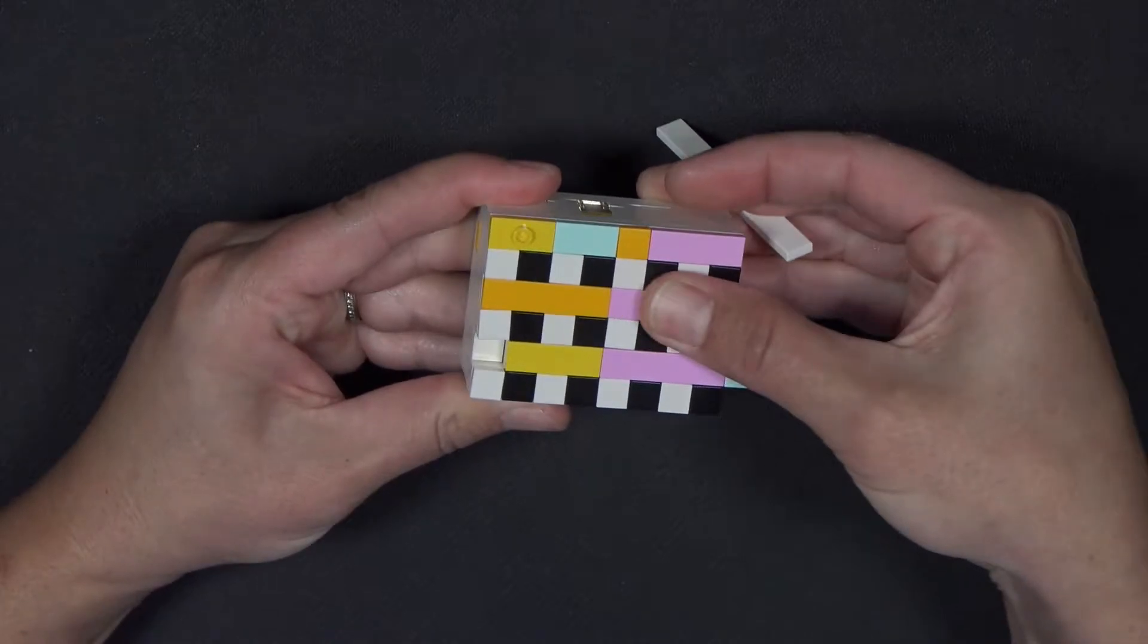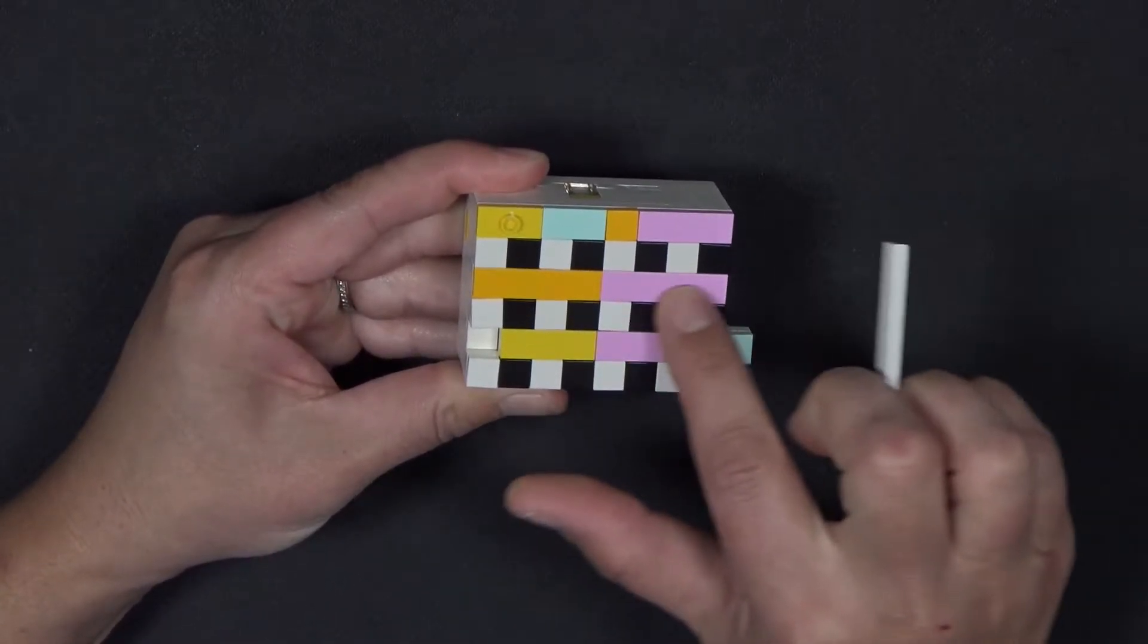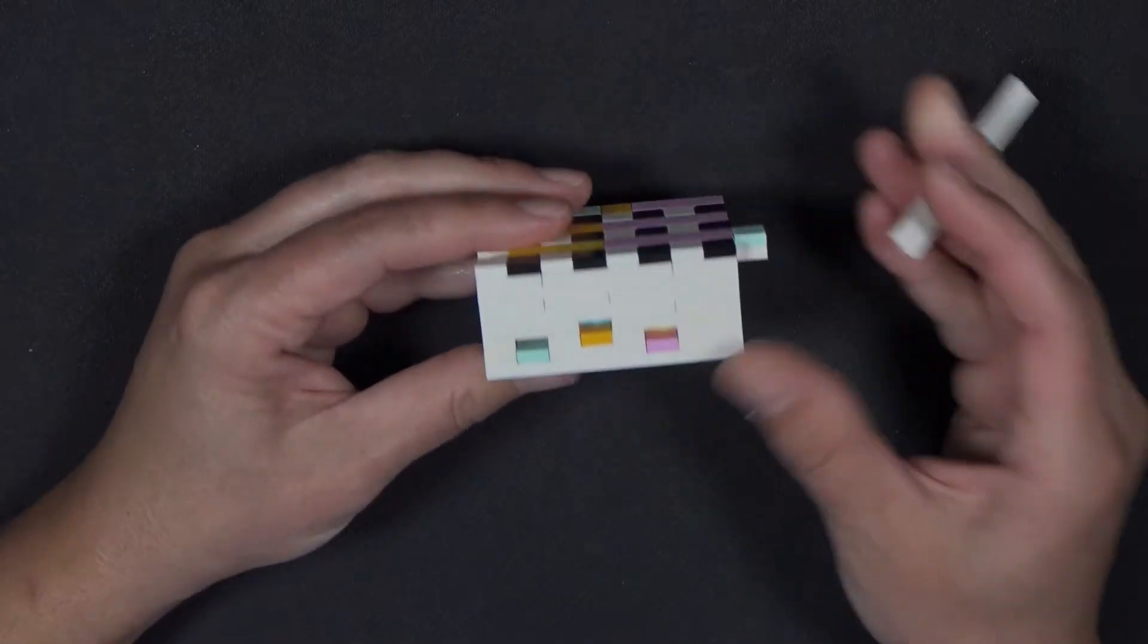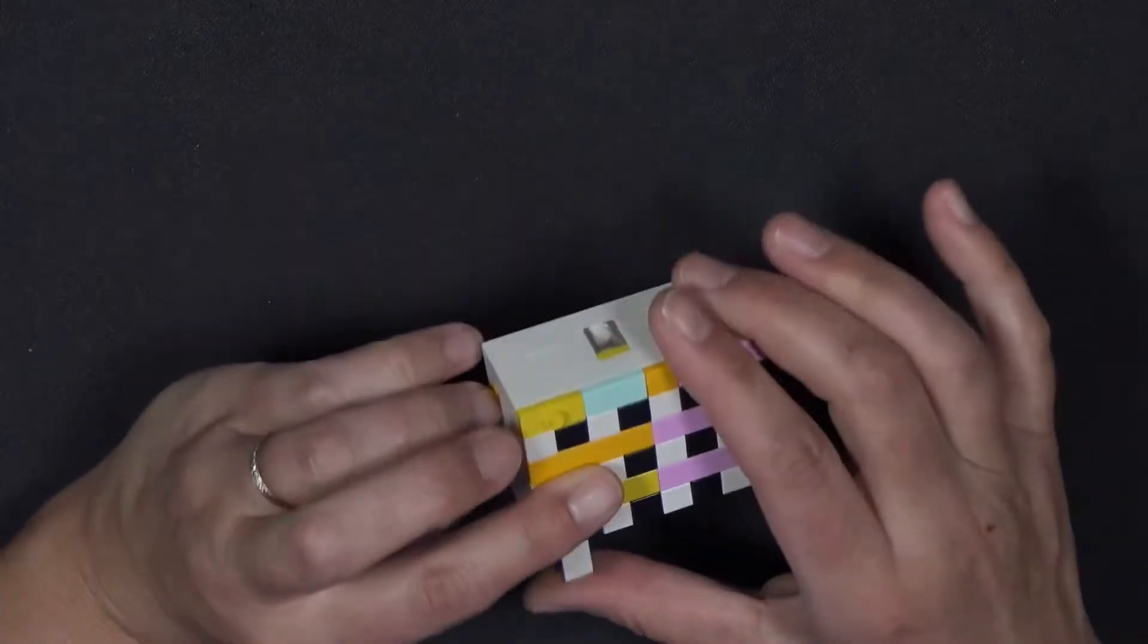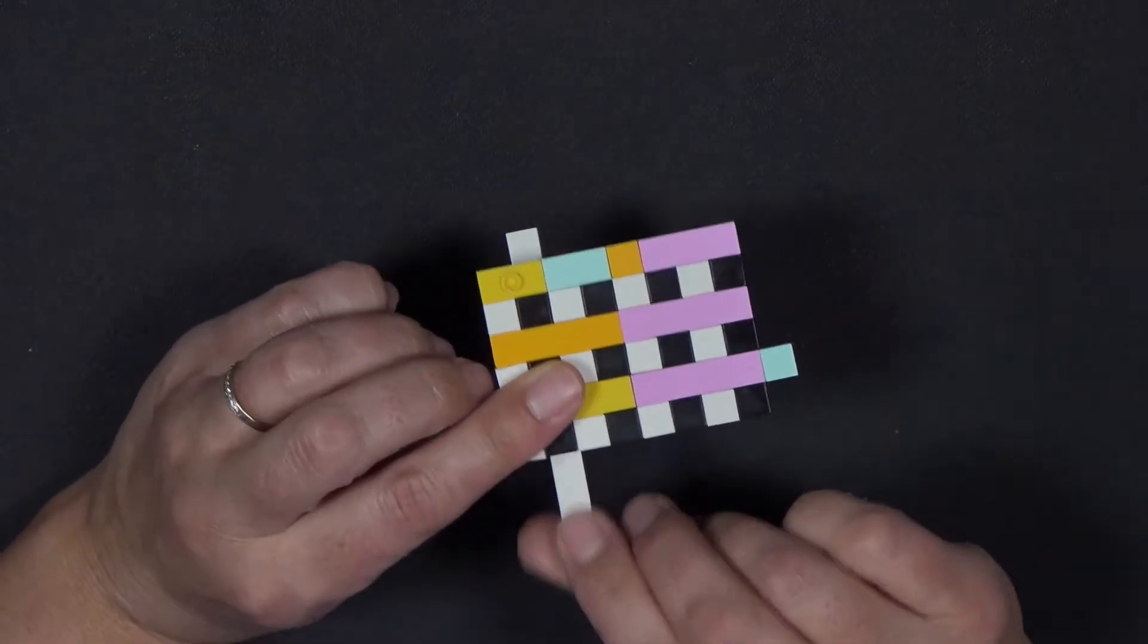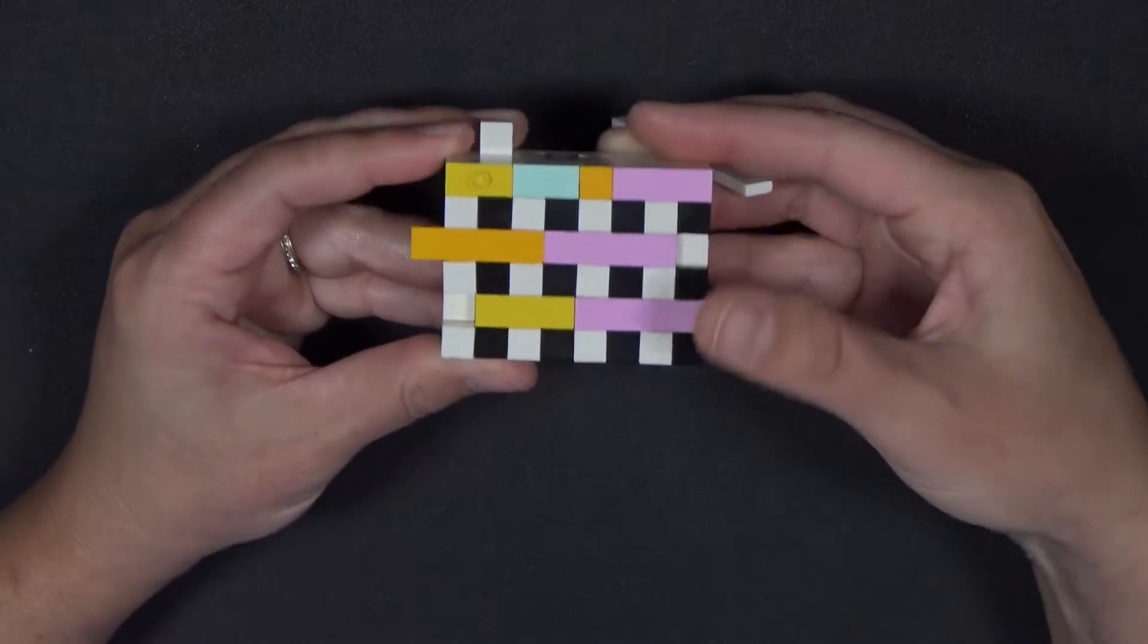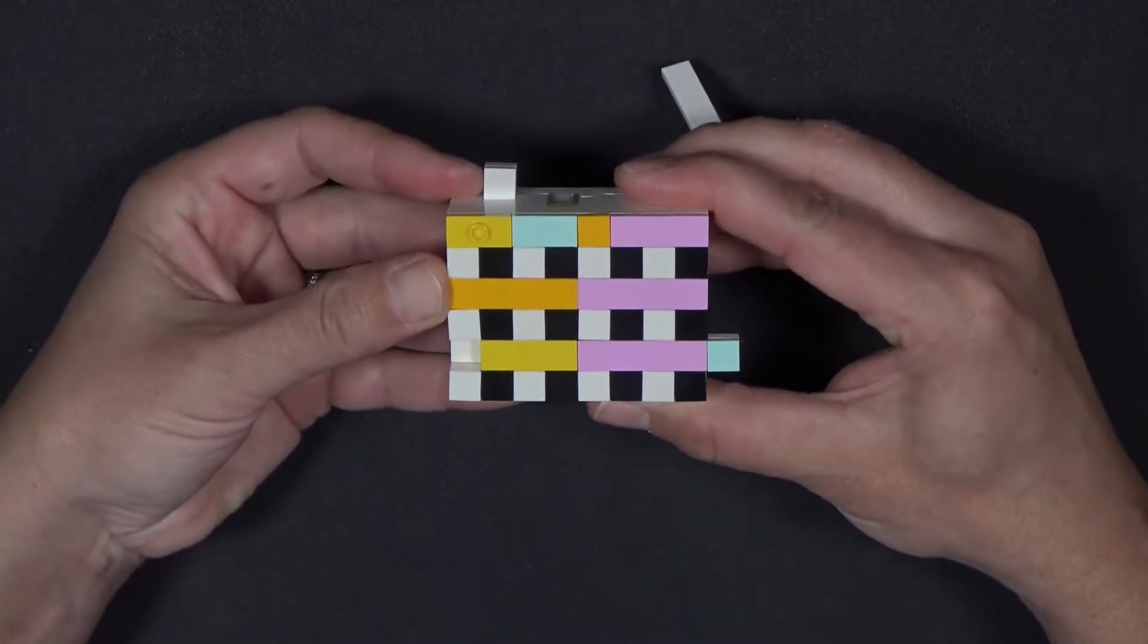Currently if I try to move this second row of colored pieces, it doesn't move. But once I release this piece there, the second row of colored pieces shifts.